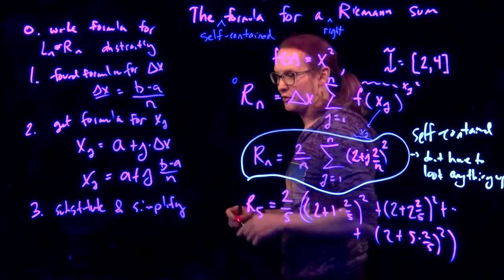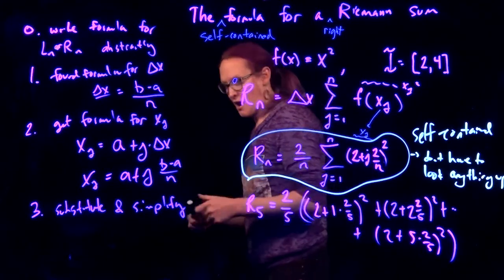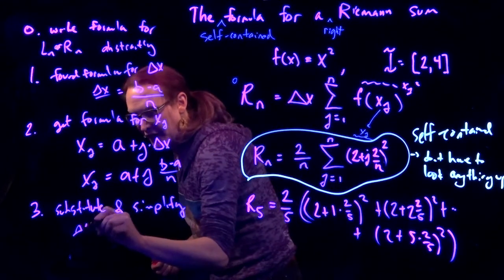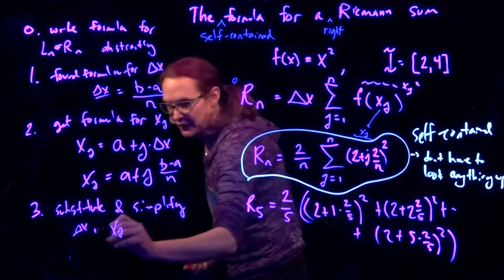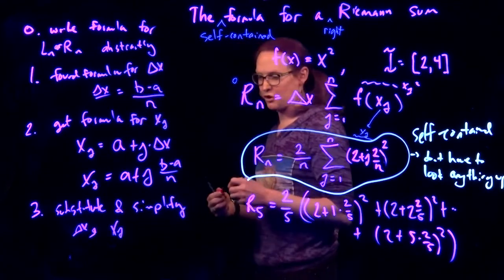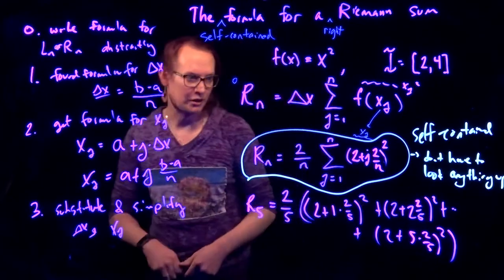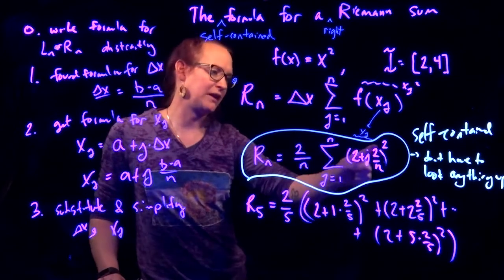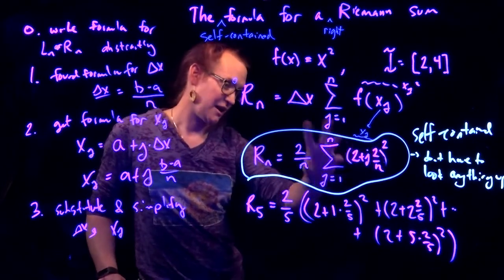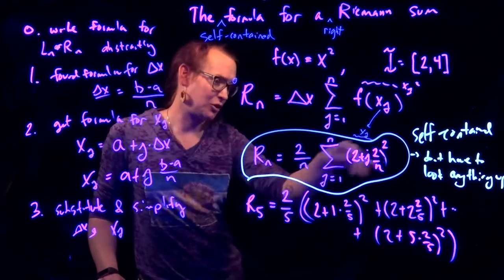And the last step would be to substitute both delta x and x sub j into your formula, into your formula. And then the available simplification we're going to do. If we really wanted, we could distribute out this square and we'd get some terms.